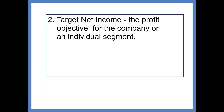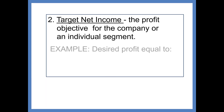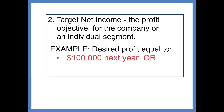Target income: once a company has determined their breakeven point, they may want to build in some profit level that they are hoping for. For example, they might set profit to be $100,000 next year, or the goal may be 10% of sales.